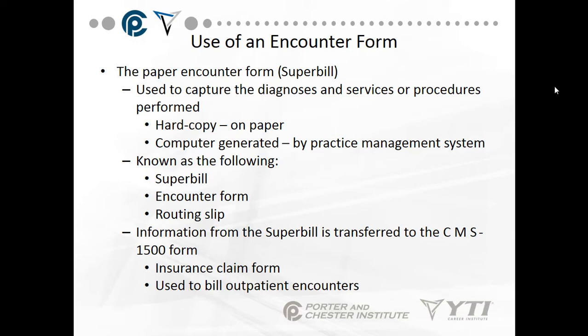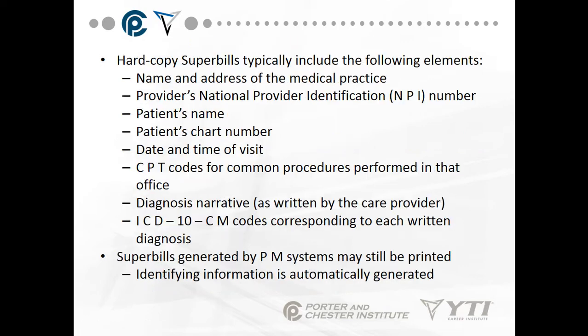Some practices still use paper forms and then have the information entered into the system; others are 100% on a computer system. Information from the super bill is transferred to the CMS 1500 form through the computer system — people do not do this manually. This is the insurance claim form used to bill outpatient encounters. Once the information is in the system, it automatically populates the insurance claim form, and then billers review it to make sure everything is complete.